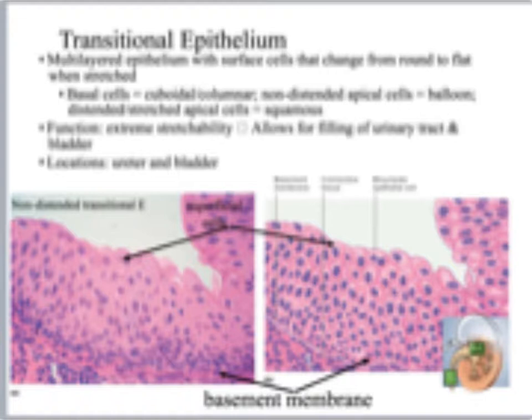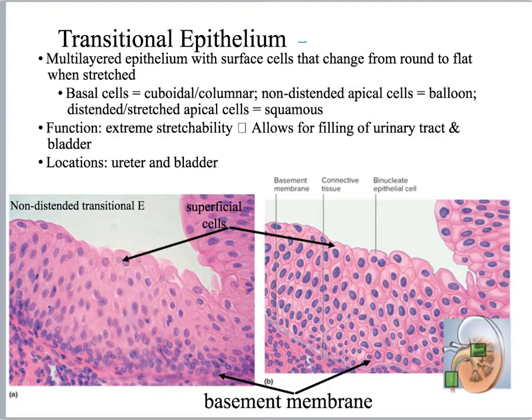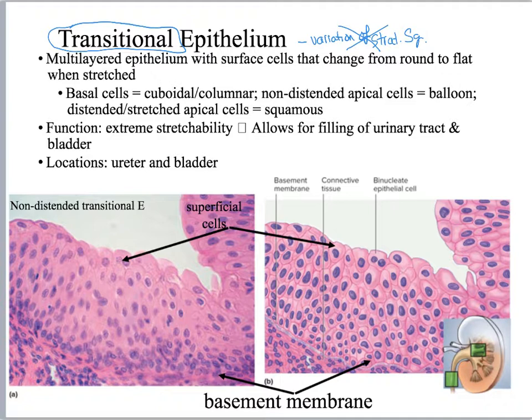Let's look at transitional epithelium. Some books will say that this is a variation of stratified squamous, and technically it is, but I want you to just focus on the name. If you get into higher-level anatomy and physiology classes you can think about the technicalities, but for now just focus on calling this transitional epithelium.